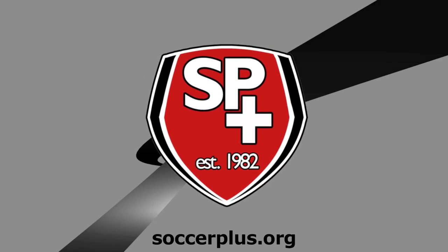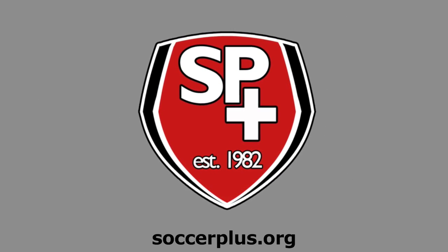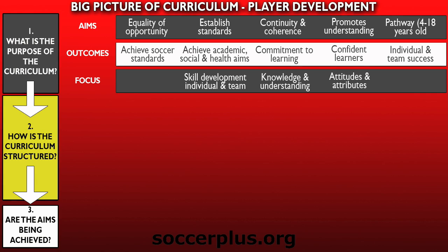The first element to consider are the curriculum aims. Number one: establish equal opportunity for all members. This should be a fundamental aim for all youth sports organizations. Although many organizations aim to provide equal opportunity, very few truly achieve it. A common practice is best described as offering equal access to participation, meaning each child has the